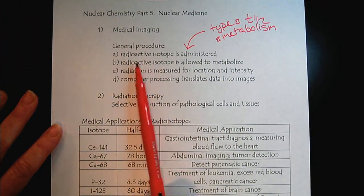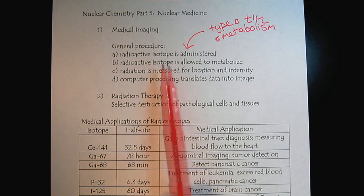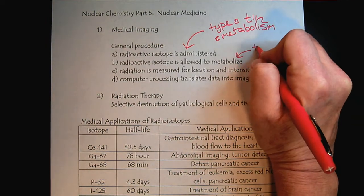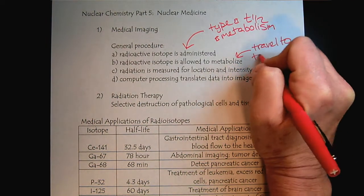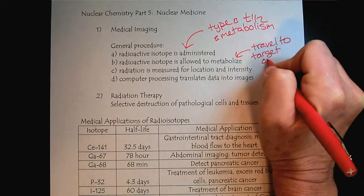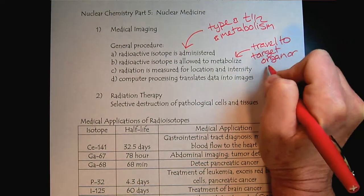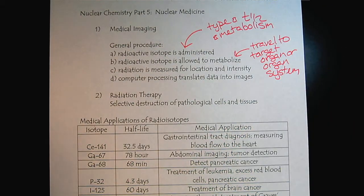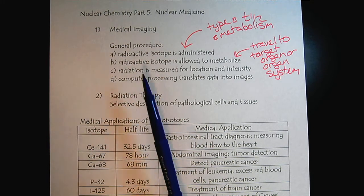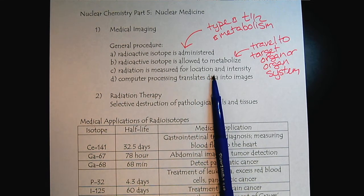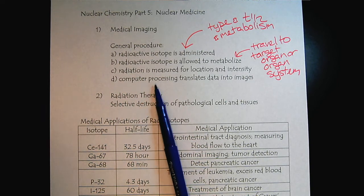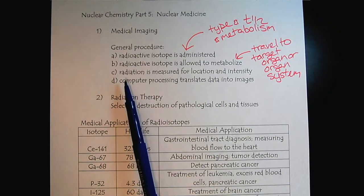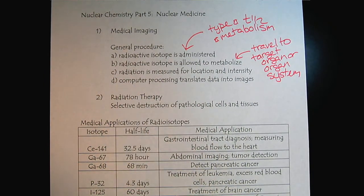Once that radioisotope is administered, we have to allow it to metabolize and travel to the target organ system. Then the radiation is measured for location and intensity, and computer processing techniques translate this data into images. This is the general procedure for medical imaging.